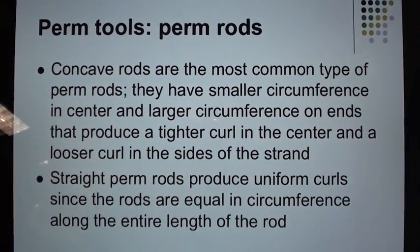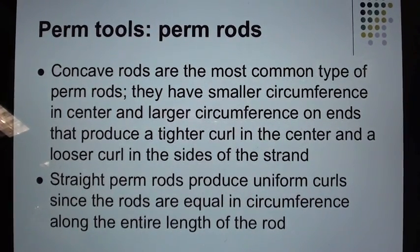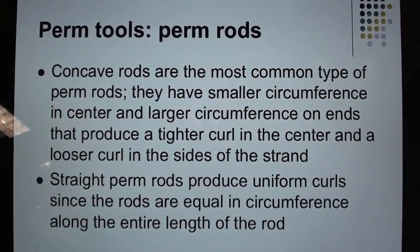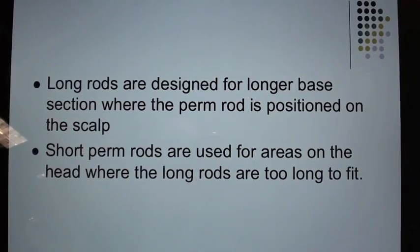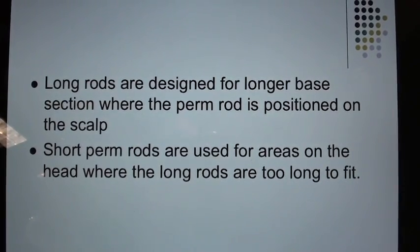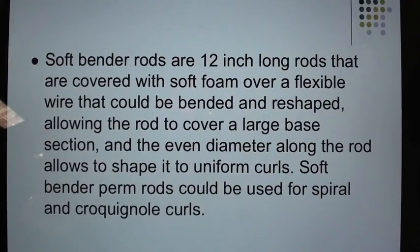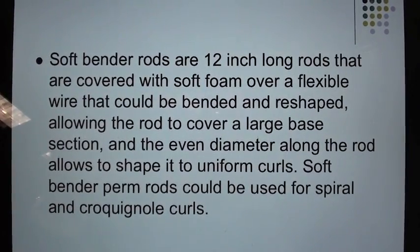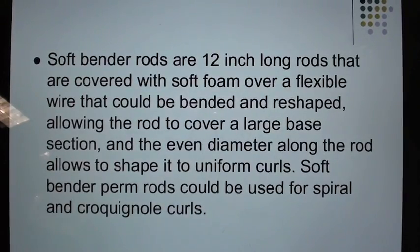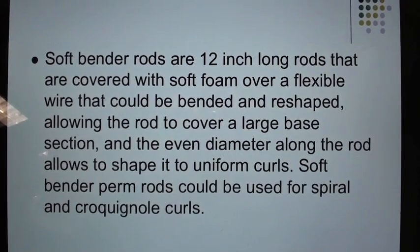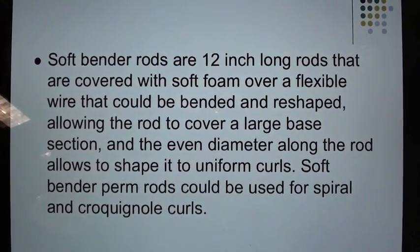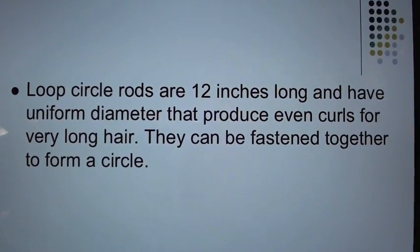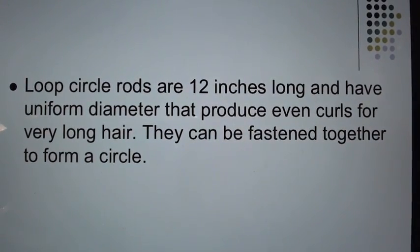Perm rods: Concave rods are the most common, with a smaller circumference in the center and larger circumference at the ends, producing a tighter curl in the center and looser curl at the sides. Straight perm rods produce uniform curls since they are equal in circumference along the entire length. Long rods are for larger base sections; short rods are used where long rods are too long to fit. Soft bender rods are 12-inch rods covered with soft foam over a flexible wire, bendable and reshapable, usable for spiral and croquignole curls. Loop/circle rods are 12 inches long with uniform diameter, producing even curls for very long hair and can be fastened together to form a circle.